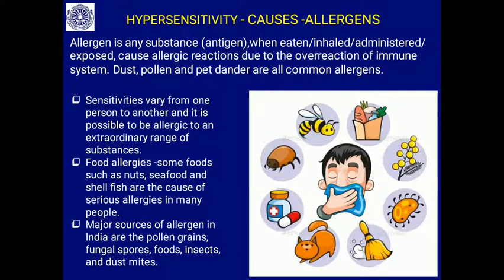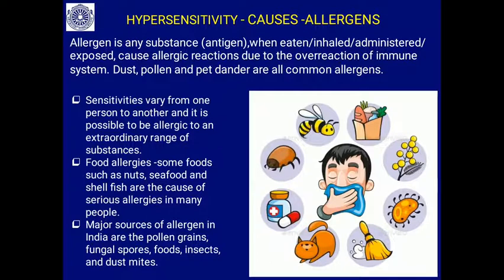What are allergens — which substances cause allergy? An allergen is any substance or antigen that, when eaten, inhaled — such as pollen grains or fungal spores — or administered by injection, like drugs, causes allergic reactions. Common allergic reactions occur with penicillin; some people are allergic to certain drugs. The body is exposed to these allergens and overreacts immunologically. Common household allergens include dust, pollen, and pet dander — the dead skin cells of pet animals. Sensitivities vary from person to person.